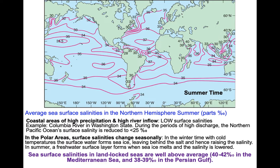Surface salinity changes in the polar regions fluctuate quite significantly on a seasonal basis. In wintertime, in cold temperatures, the surface water gets very cold due to low atmospheric temperatures and sea ice starts forming. When sea ice forms, it leaves the salt behind in the liquid seawater. Therefore, in wintertime, surface waters become extremely salty and saline — one of the reasons polar waters sink rapidly in winter because of their high salinity and high density. This changes in summer when polar ice sheets and ice caps start melting, adding much more fresh water to polar regions and decreasing salinity.